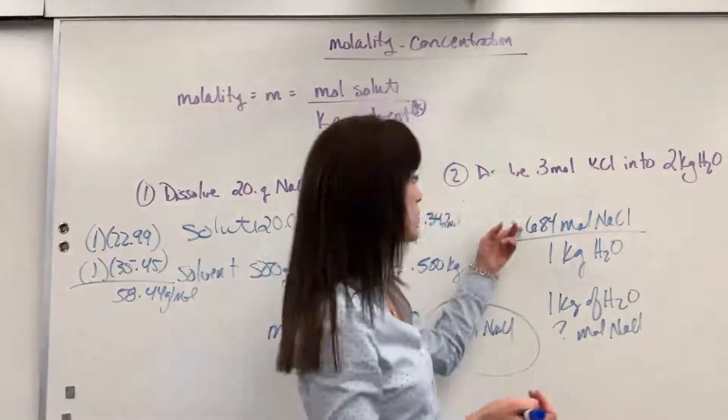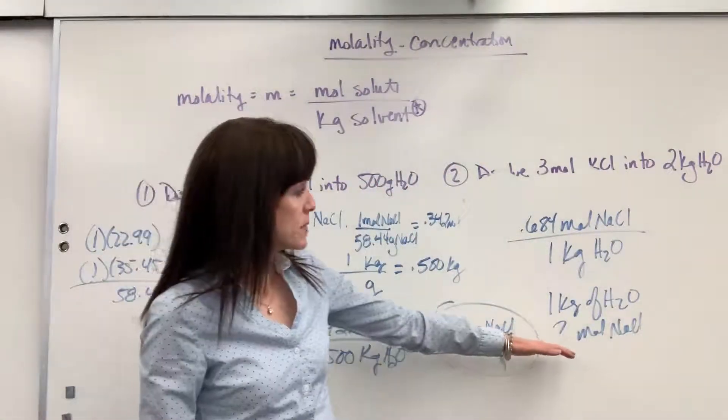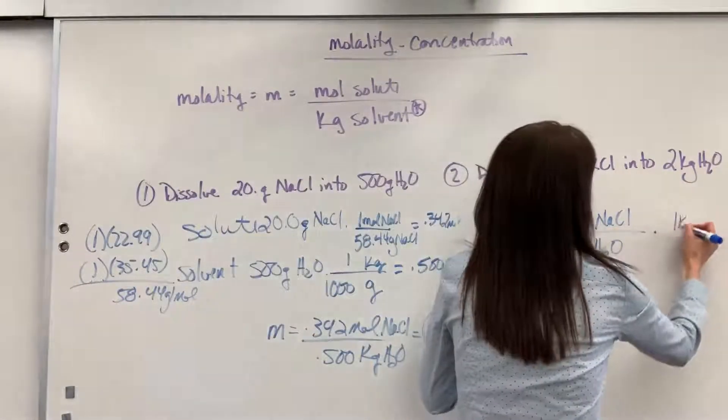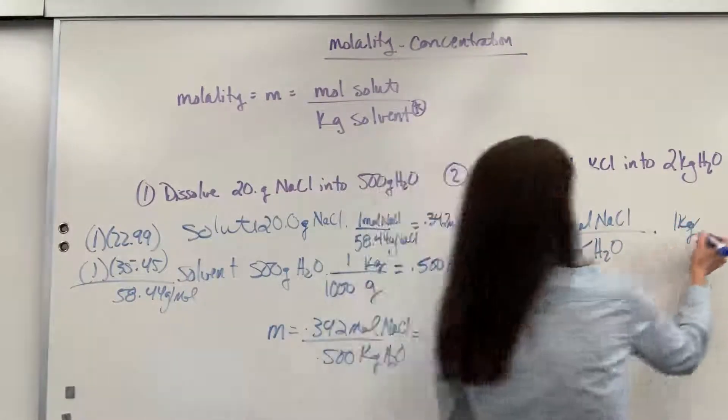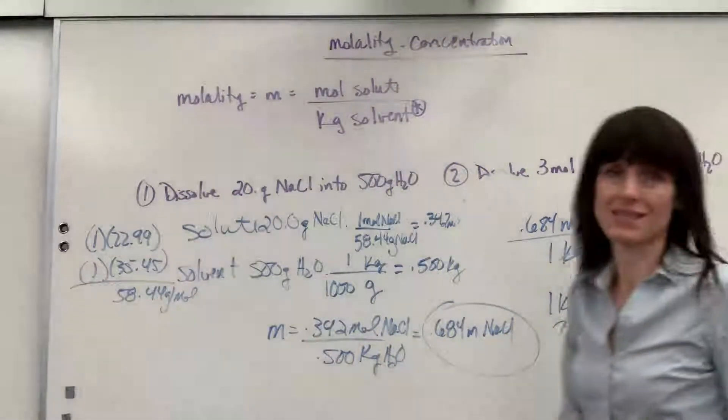I broke it apart so I can see the moles of the sodium chloride, the kilogram of the water. I'm simply going to take my kilogram and multiply it. Well, if I've got one kilogram of water, notice kilograms cancels, that means I must have 0.684 moles of sodium chloride floating inside of that water.